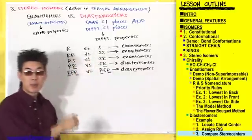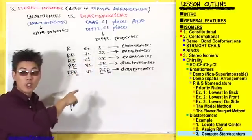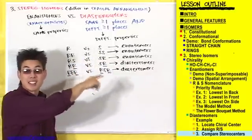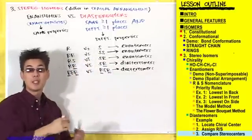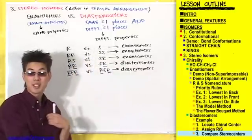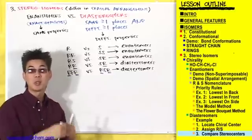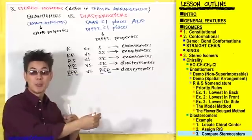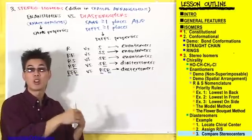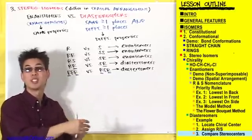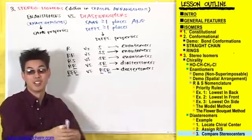If this had been RRR versus SSS, that would have been exact opposites, making them enantiomers. If these were identical compounds, it would be RRR versus RRR.